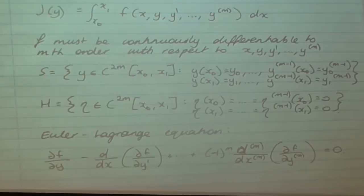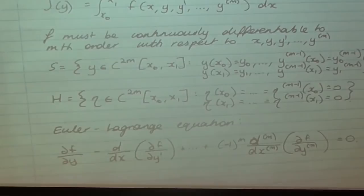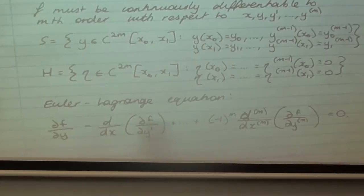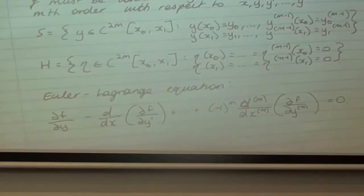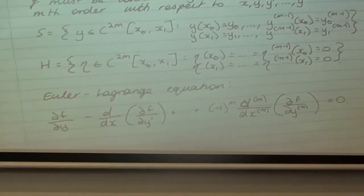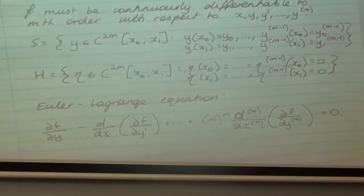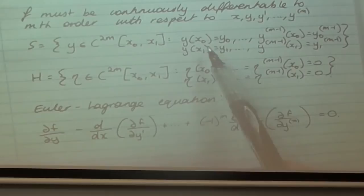There are two important parts to the set S. First, y is continuously differentiable up to order 2m on the interval [x0, x1] — important both for differentiating f and for what we must do once we have the Euler equation. Also, we need many boundary values: unlike the basic case where we just need y(x0) and y(x1), here we'll get a differential equation of order 2m, so we need 2m constants to solve it, and accordingly 2m boundary values are provided.